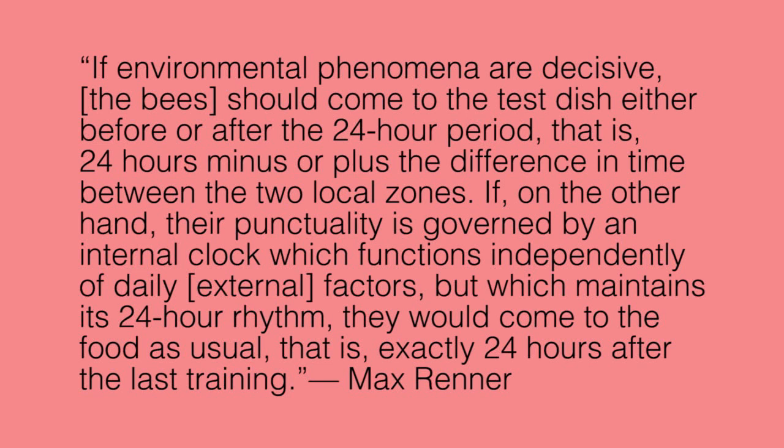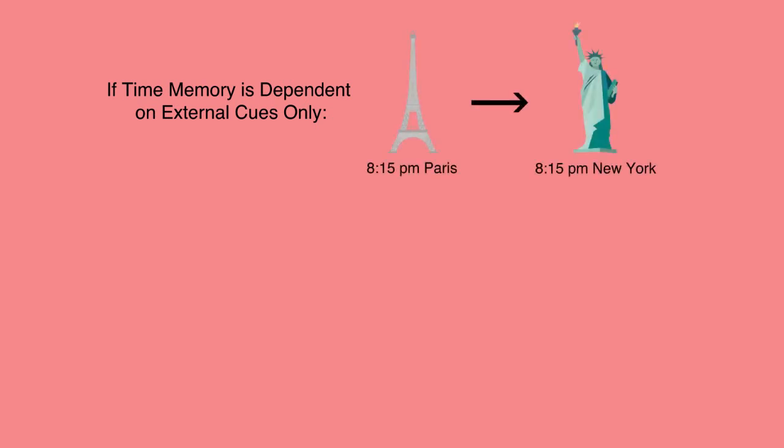His hypothesis was as follows: if environmental phenomena are decisive, the bees should come to the test dish either before or after the 24-hour period — that is, 24 hours minus or plus the difference in time between the two local zones. If, on the other hand, their punctuality is governed by an internal clock which functions independently of daily external factors but which maintains its 24-hour rhythm, they would come to the food as usual, exactly 24 hours after the last training. In other words, if the bees' time memory ability is dependent on external cues only, it would be expected that the bees appear for feeding at the time of day when the environment in the new test site, New York, is most similar to the environment of the old test site, Paris — meaning that the bees would reset their watches.